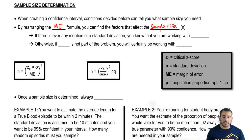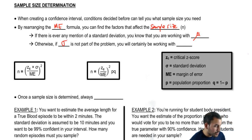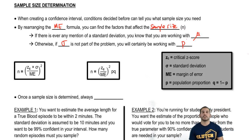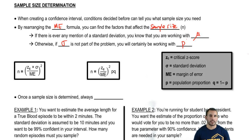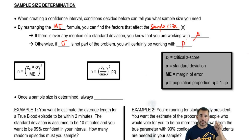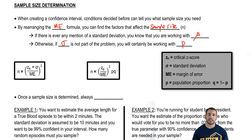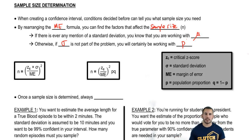If there's any mention of a standard deviation, you're working with means. Otherwise, you're working with proportions. The quickest way to tell the difference: if they say 'standard deviation,' you're definitely working with means — because calculating the standard error for means requires standard deviation over square root of n. For proportions, there's no standard deviation; it's just square root of pq over n. So if no standard deviation is mentioned, you're working with proportions.